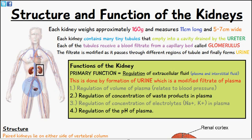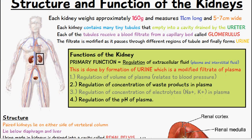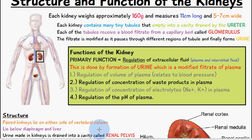We can see from this image the approximate location of the kidneys. We have two of them and they are located on either side of the vertebral column. They lie below the diaphragm and the liver — in the case of the right kidney, it's below the liver.